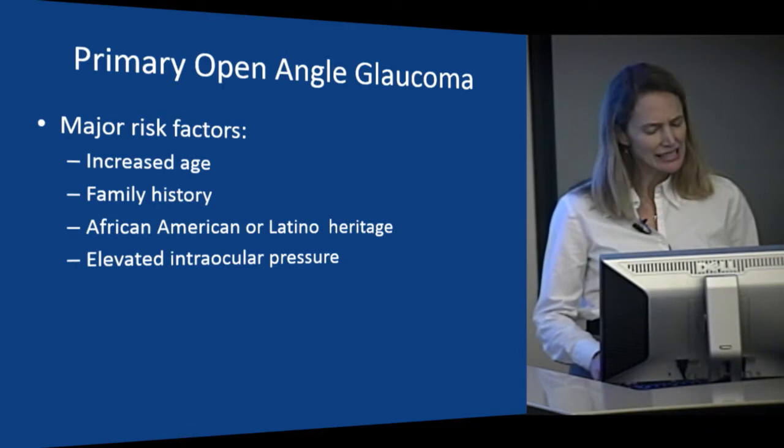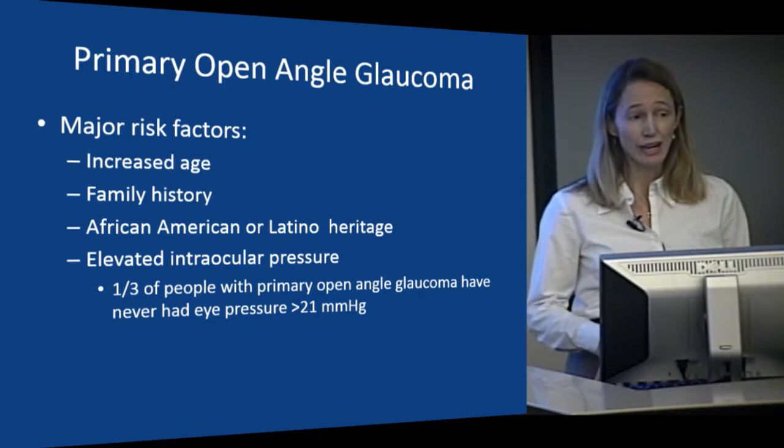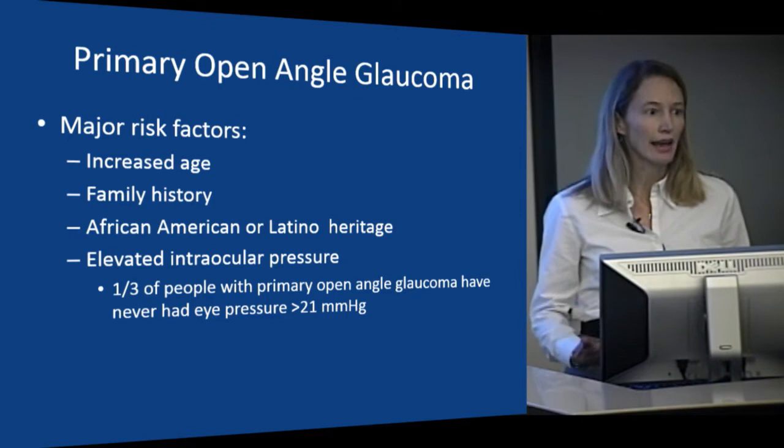This is important because a lot of people think that pressure is synonymous with glaucoma, and many ophthalmologists thought that for many years. But we've more recently learned that probably a third of people with primary open angle glaucoma have never had a documented pressure above 21, which is usually thought to be the upper end of normal. So you can certainly have glaucoma and not have high pressure.